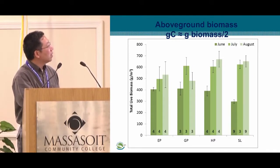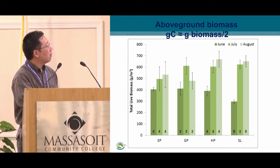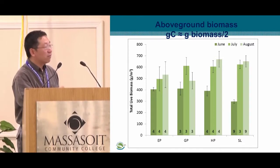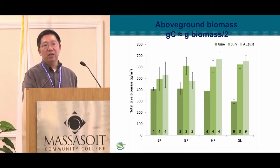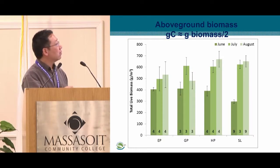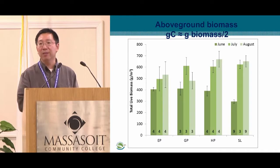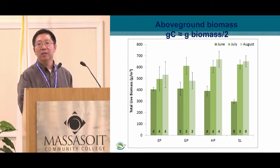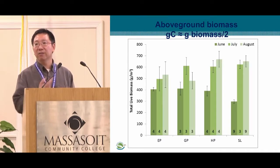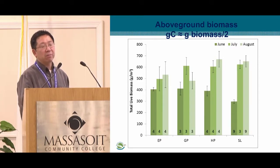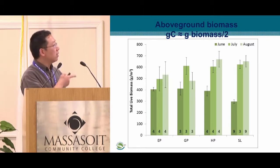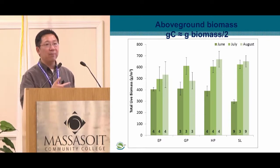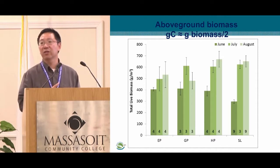For above-ground biomass (NPP), we did a lot of clipping of marshes across the four sites, measured three times per year, and did not find a significant difference across the four sites. The total amount of biomass is about 500 grams of biomass per square meter per year. Converting to carbon — dividing by two — that's about 300 grams of carbon per square meter per year in above-ground biomass, which is a little less than half of the total GPP of around 700 to 800.